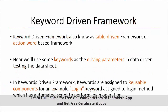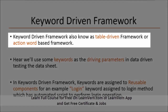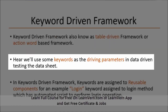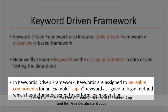Now let's see keyword-driven framework. Basically, keyword-driven framework — we can say table-driven or action-word-based framework. Here, the main focus or core points are keywords. We have to define keywords properly, and people will use the keywords as a parameter. The keywords are reusable components — for example, open a browser, login, close a browser, click on this button. All these keywords are reusable components because we can use login and open browser in multiple applications.